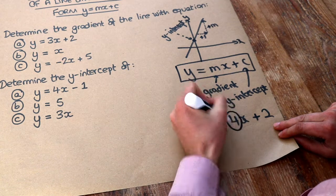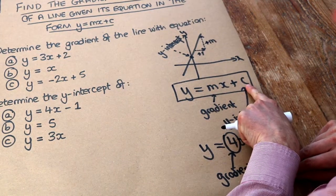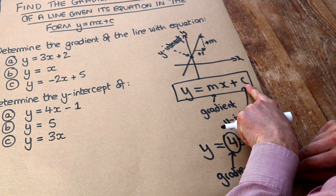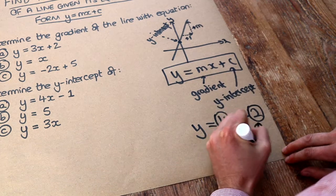So we can see the gradient here is 4. And the number on its own, which doesn't have an x, that's otherwise known as a constant term, when you don't have a variable in it, we can see is the 2. So the y-intercept is 2.